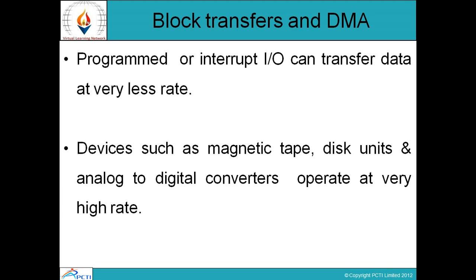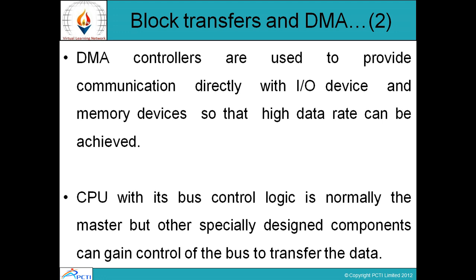Now block transfers and DMA. A program or interrupt I/O can transfer data at a very low rate. Devices such as magnetic tape, disk units, and analog-to-digital converters operate at a very high rate. DMA controllers are used to provide communication directly with I/O devices and memory devices so that a high data rate can be achieved. हम DMA controllers का use करते हैं direct communication establish करने के लिए I/O devices और memory devices के बीच।